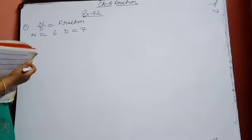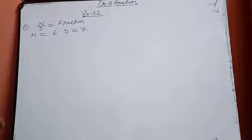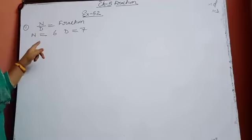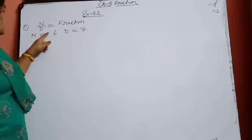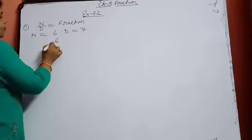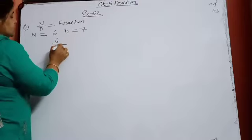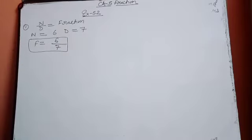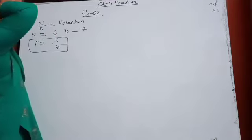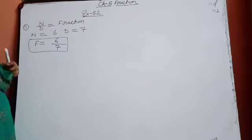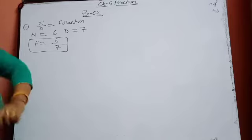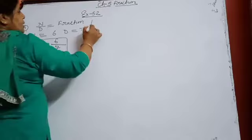A fraction can be written in the form of numerator upon denominator. In exercise 5.2 question 1, numerator is 6 and denominator is 7, so the fraction value is 6 upon 7. Different numerators and denominators are given — you will do this question yourself as it is very simple.